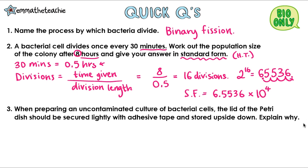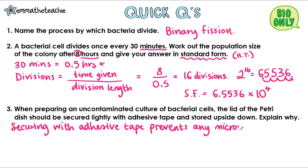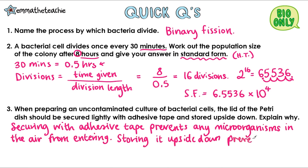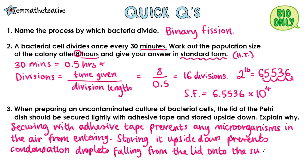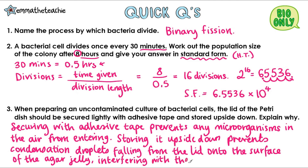Well done if you got that. Number 3: when preparing an uncontaminated culture of bacterial cells, the lid of the petri dish should be secured lightly with adhesive tape and stored upside down — explain why. Securing with adhesive tape prevents the entry of microorganisms from the air, and storing it upside down prevents condensation droplets falling from the lid onto the agar surface, which would interfere with the bacterial growth.